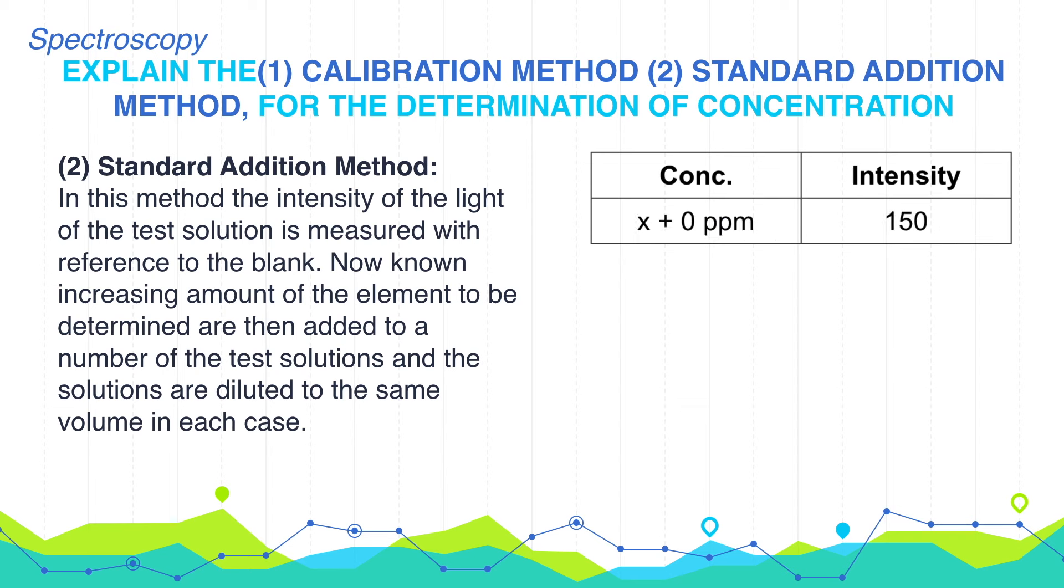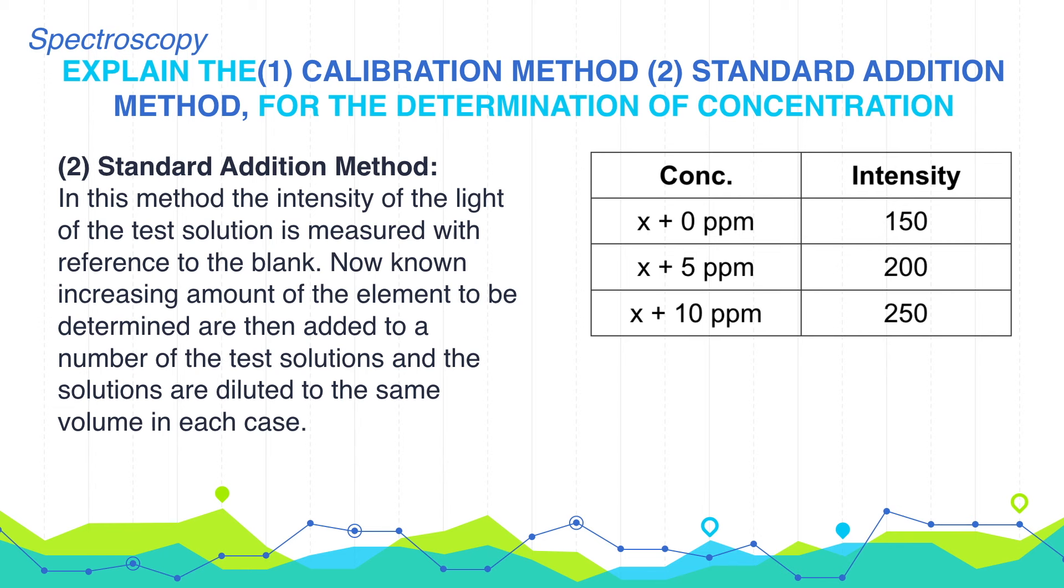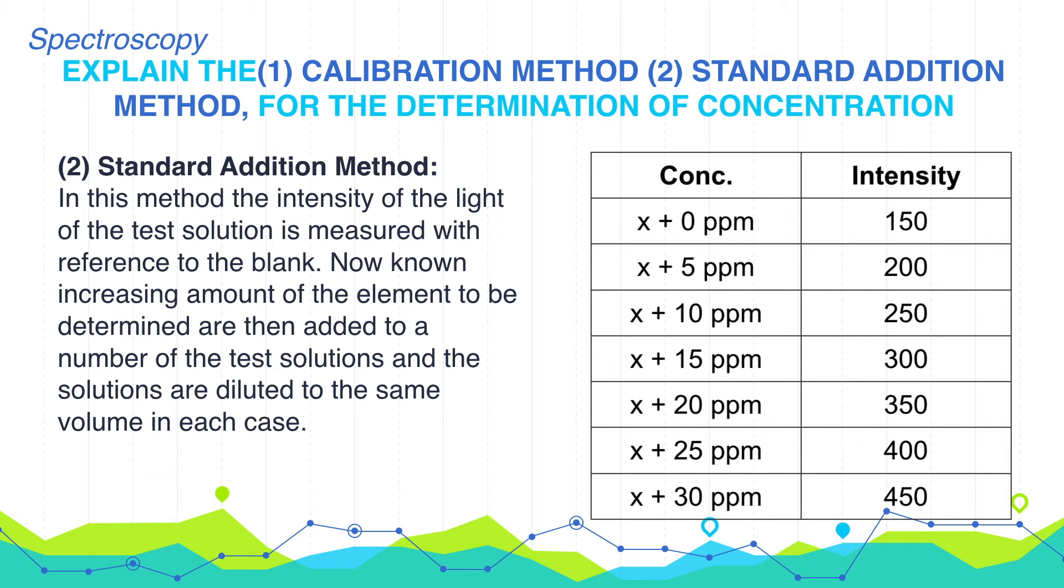Now known increasing amounts of the element to be determined are then added to a number of the test solutions, and the solutions are diluted to the same volume in each case. Here you can see in the table that to the unknown solution, 5 ppm, 10 ppm, 15 ppm, 20 ppm, 25 ppm, and 30 ppm of the solution is added.